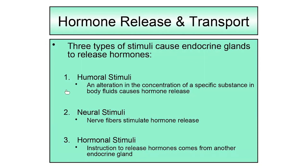The first is what's known as humoral stimuli. Humoral stimuli occurs when an alteration in the concentration of a specific substance in body fluids causes hormone release. For example, when blood glucose levels increase, this causes insulin to be released — that's humoral stimuli. The specific substance is glucose, the body fluid is blood, and the hormone released is insulin. That's a good example of humoral stimuli you may already be familiar with.